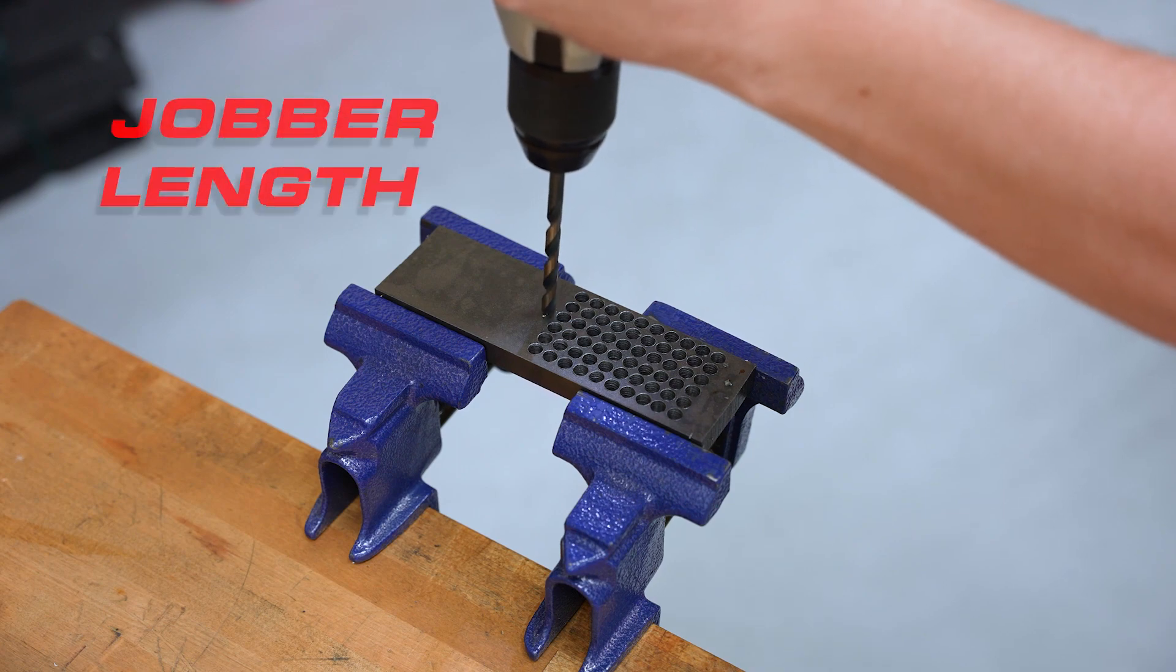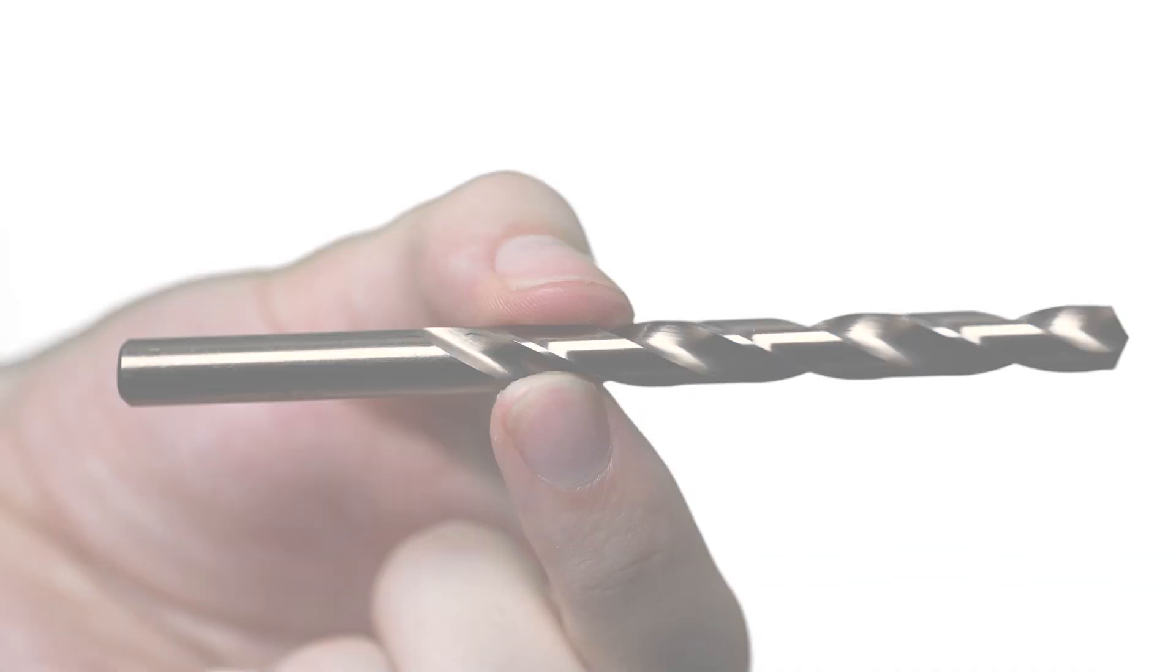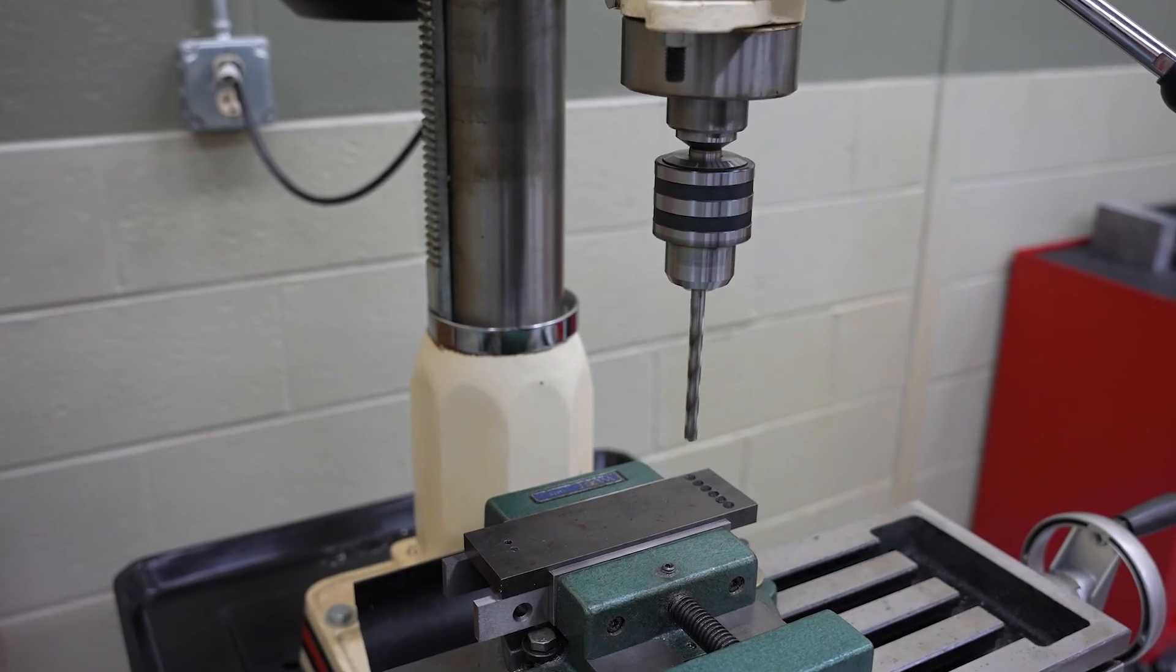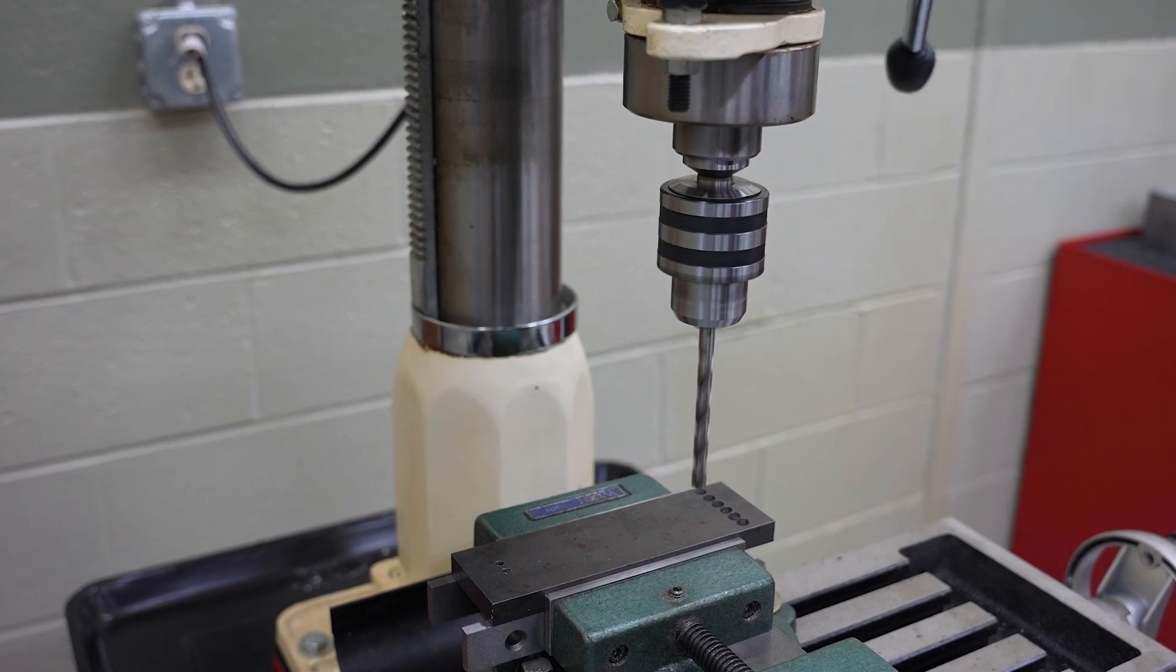Jobber drills are the most widely available style. These are medium length with a shank and point of the same diameter. Jobbers can be used in many situations which helps explain their popularity.